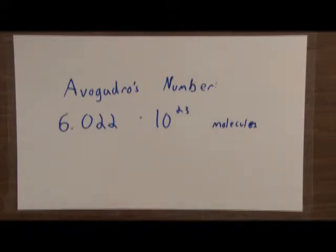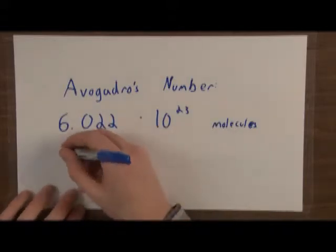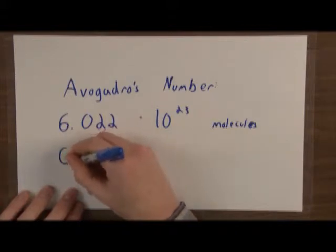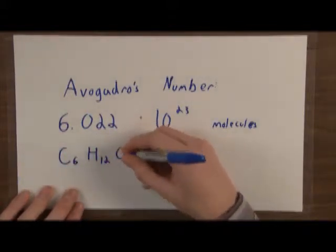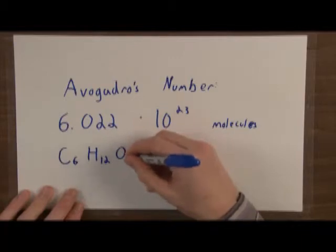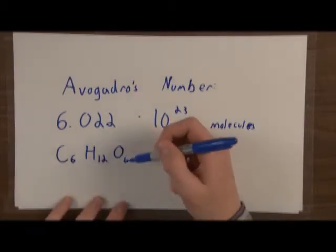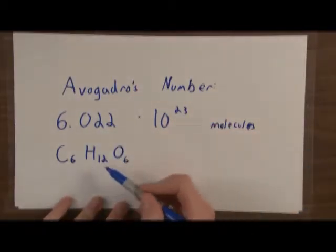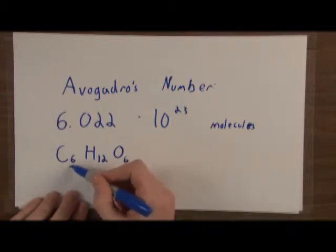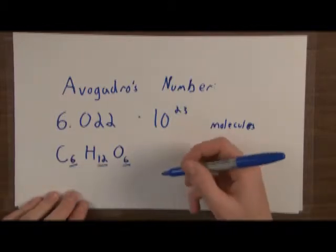Let's take a good biological example — something you see a lot: glucose, which has the formula C6H12O6. Let's say we have one mole of glucose. Inherent in one mole of glucose, looking at these subscripts, there are six moles of carbon atoms and six moles of oxygen atoms.